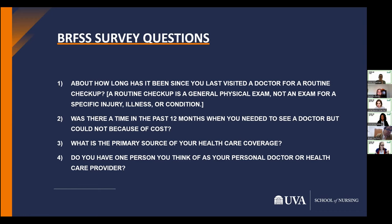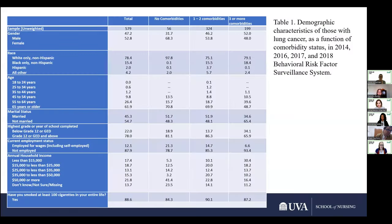The survey questions addressed whether cost was an issue, how many physicians they considered their primary care physicians, and similar topics. Most of the sample was female and white. Notably, 70% of those with no comorbidities and with one to two comorbidities were over the age of 65, while only 49% with three or more comorbidities were over the age of 65.